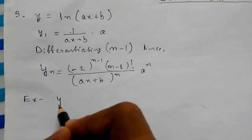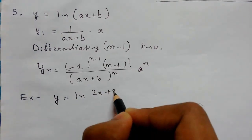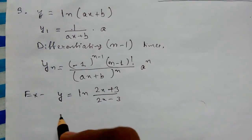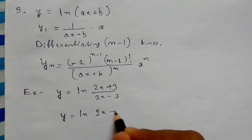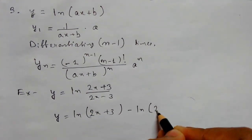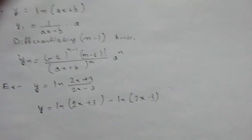Let me show you an example. If y equals ln of (2x + 3) over (2x - 3), first simplify it by breaking this down. You need to think a little bit here.